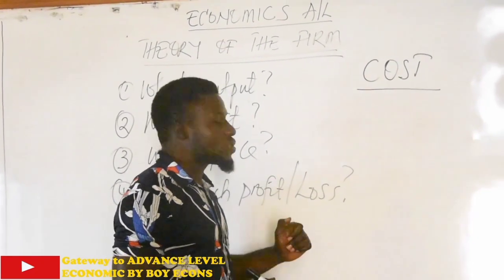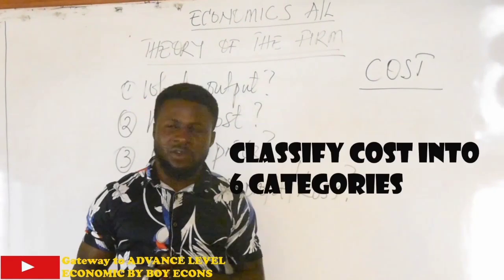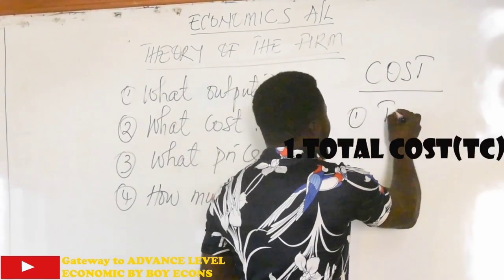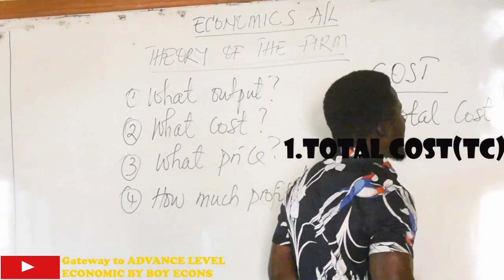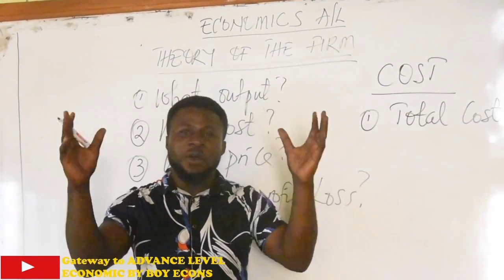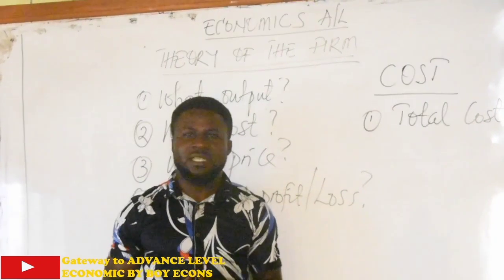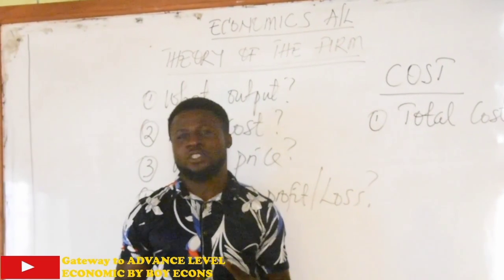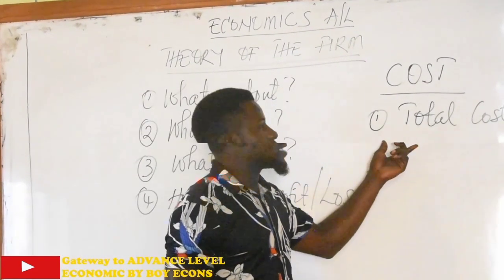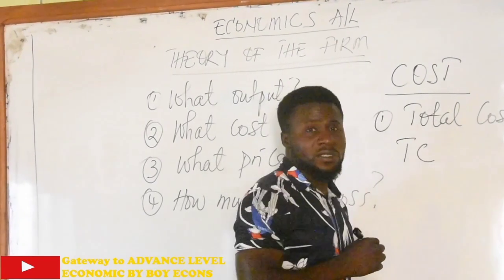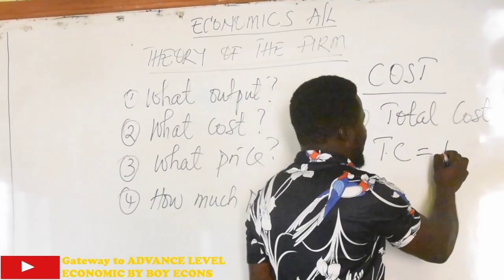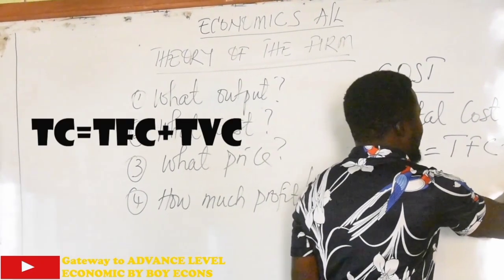And so we will be looking at cost in some six categories. The very first classification of cost is going to be total cost. Just from its appellation total cost, it tells us that it is the total amount of expenses that an entrepreneur or a businessman incurs in order to gather factors of production such as land, labor, and capital to produce goods and services. And total cost, we will be abbreviating total cost with TC. So when you see TC, you know we are referring to total cost. So total cost is simply calculated as total fixed cost plus total variable cost: TC = TFC + TVC.